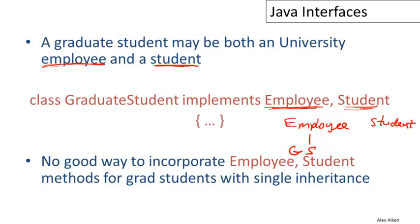And similarly, if I have a student class, I can make graduate student a subclass of that, but now how do I get the employee functionality? So in single inheritance, you're forced to choose a single class to inherit from.